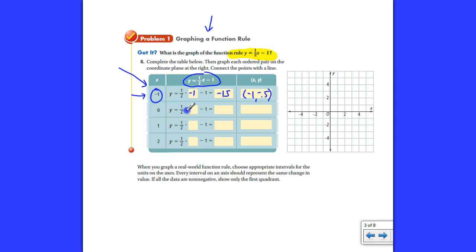And if we do the same thing for this, zero, we love zero because zero makes things go away. One-half times zero is zero, so that's negative one. So, you have the ordered pair zero, negative one.